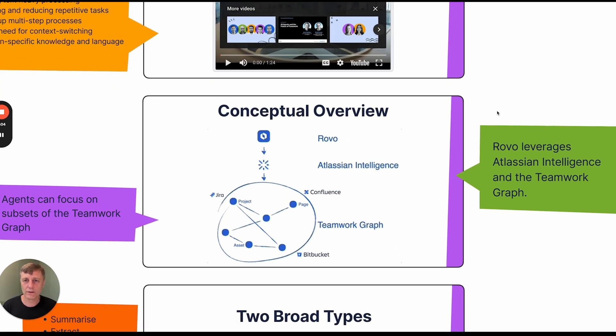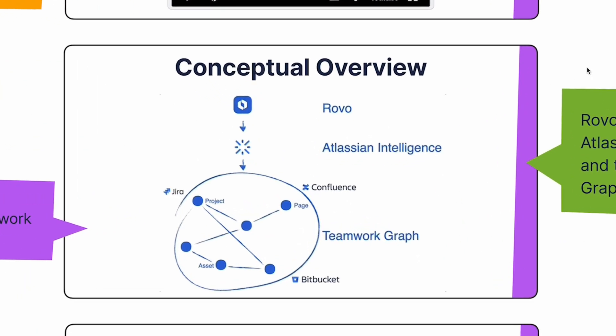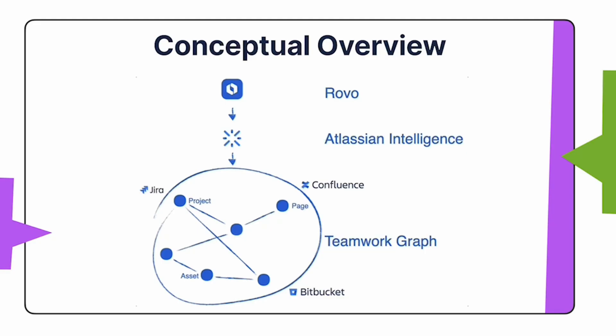Here's a conceptual overview of Rovo. Rovo leverages Atlassian intelligence capabilities to provide AI processing on customer data. Internally, this data is organised with lots of relationships between the data, which we collectively call the Teamwork Graph.